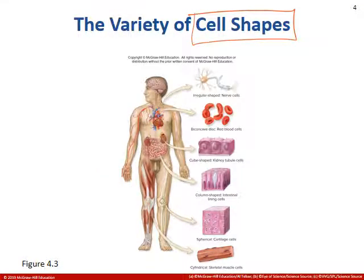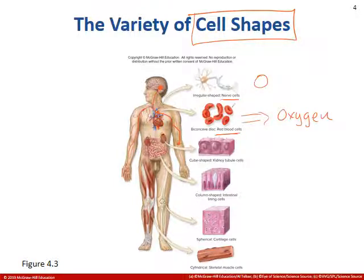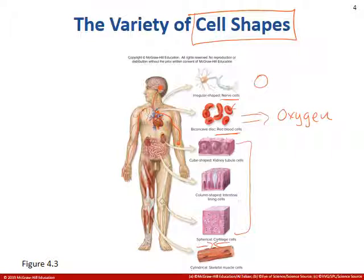Cells come in a variety of shapes, and it usually tells you something about their function. The nerve cell has an elongated, irregular shape to convey information from the brain. Red blood cells carry oxygen and have a specific shape that allows them to bind and drop off oxygen. More blocky shapes are good for building tissues. Skeletal muscle is cylindrical because the muscle has to contract and generate force to lift a load.